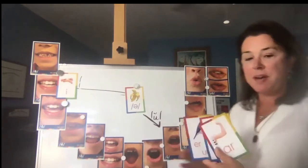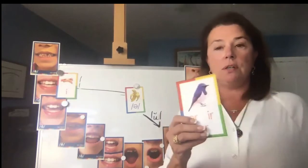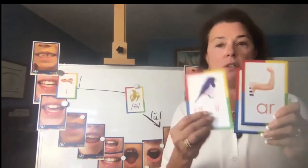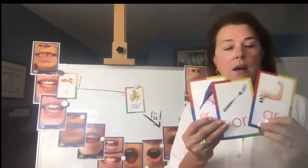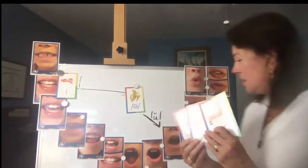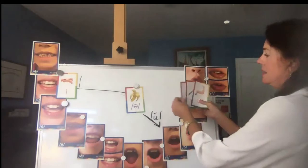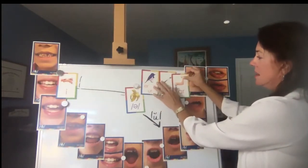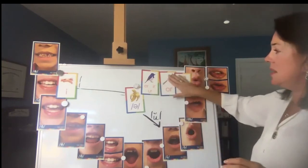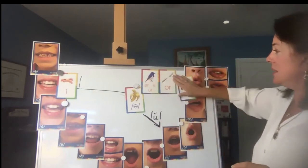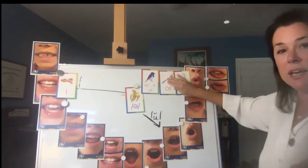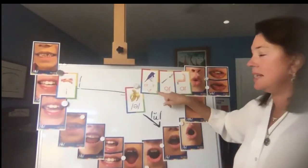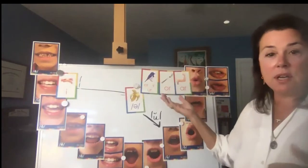We also have our three vowel R's: ER, AR, and OR — R-controlled vowels. In LETRS we teach vowel and consonant charts and explain these sounds in the language. These are another category of sounds I have to teach — R-controlled vowels are a distinct sound in the English language.